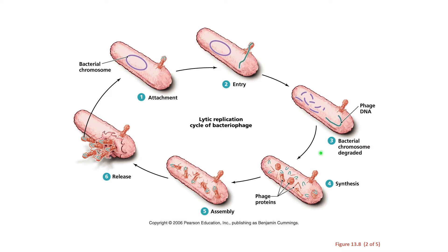Step three — I'm going to combine these two steps together and just call it synthesis. T4 has injected its DNA into E. coli strain B and wants to use the host cell machinery to produce progeny viruses. To ensure that, T4 produces an enzyme that breaks apart the E. coli strain B chromosome. T4 does not want E. coli to transcribe and translate its own DNA — that would be a waste of valuable time and resources. By breaking apart the E. coli chromosome, T4 can use all of the host cell machinery to make copies of its DNA and copies of its capsid or protein coat.